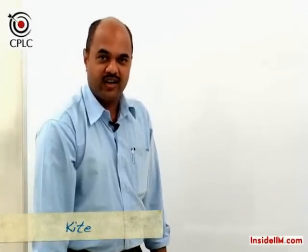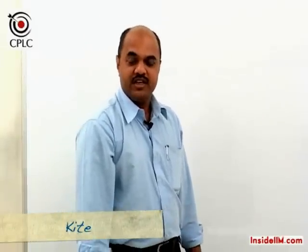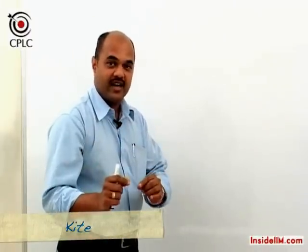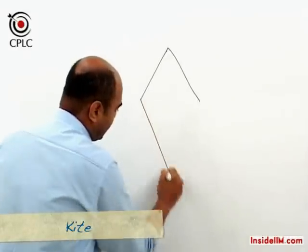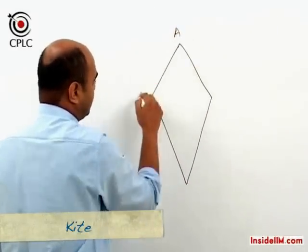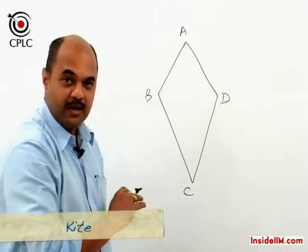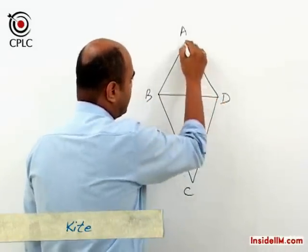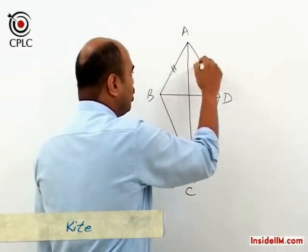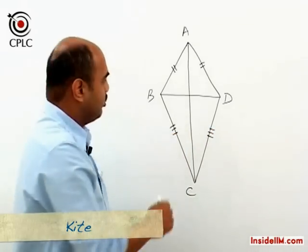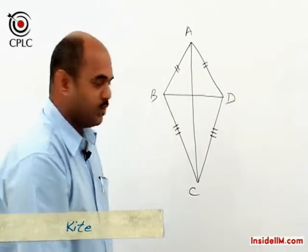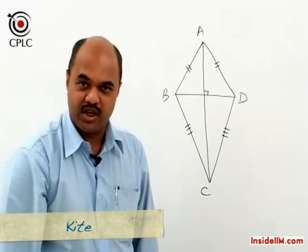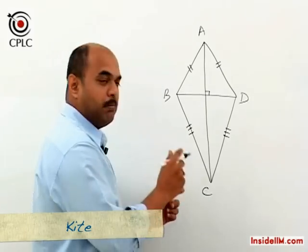In our classification of quadrilaterals, if no pair of opposite sides is parallel, such a quadrilateral is called a kite. A kite has no pair of opposite sides parallel. However, specific properties of a kite include two pairs of adjacent sides being equal: AB equals AD and BC equals DC. The diagonals are perpendicular to each other, and one diagonal bisects the other diagonal.